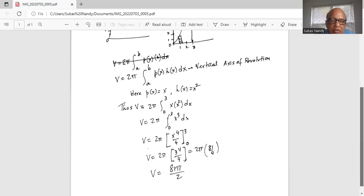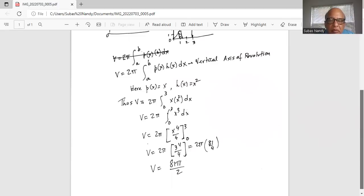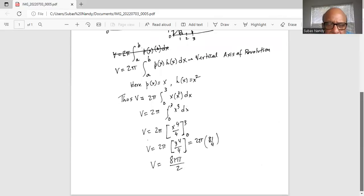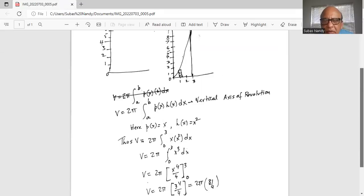Eventually we have volume equals 2π times 81 divided by 4. 3 to the power of 4 is 81. The 2 in the numerator cancels with 4 in the denominator to give us 81π divided by 2 as the volume of the solid by the shell method.